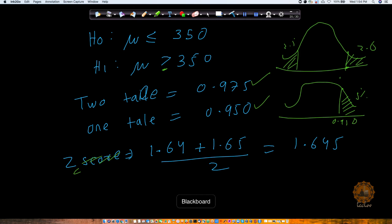So let's go back. And now here we will be doing 1.64 plus 1.65. So I will get 1.645. This is going to be Z critical value for it.